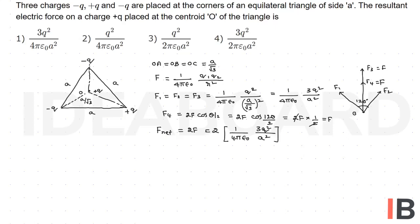And finally, now we are getting, 2 and 4 cancel, thereby, this is F net is equal to 3Q square by 2 pi epsilon 0 A square, this is the resultant force, and fourth option is the right option.